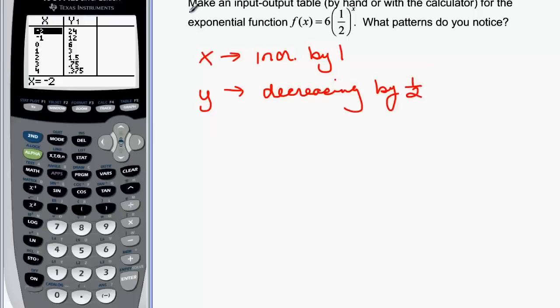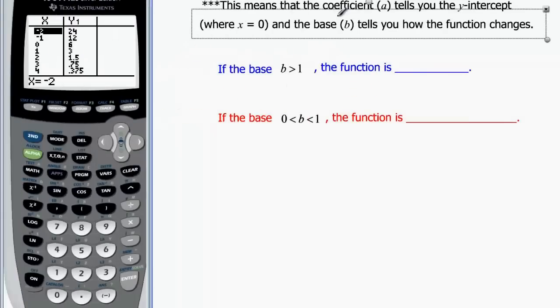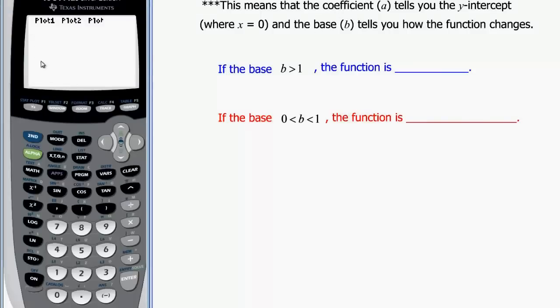Let's see if we can make some sense then, out of those patterns that we just looked at. This means that the coefficient of a, if we were to go back and look at those, the coefficient, let's look at this one over here that we already have in here. The coefficient was six. And if I look back at my table, zero six was a point on my graph. So a tells us the y intercept. When x is zero, we know what the y intercept is.